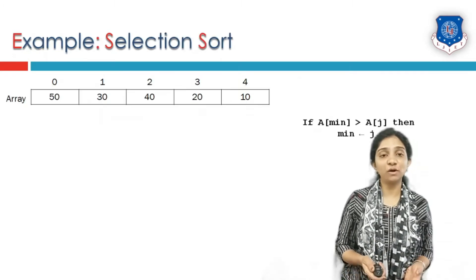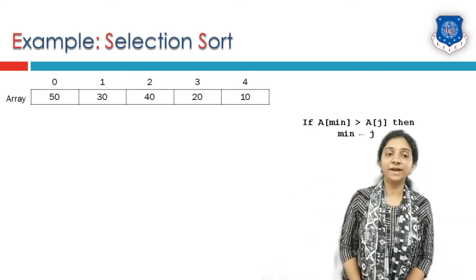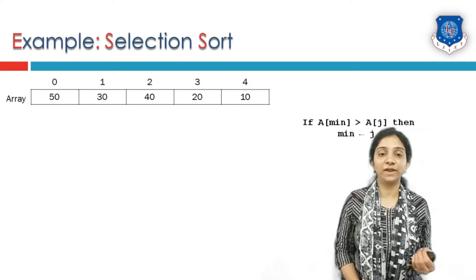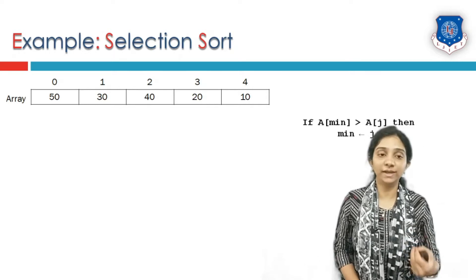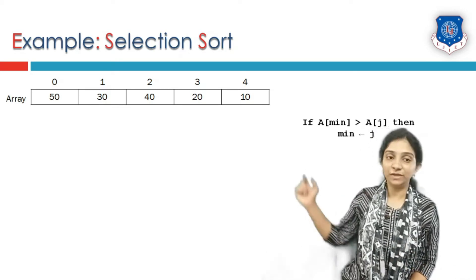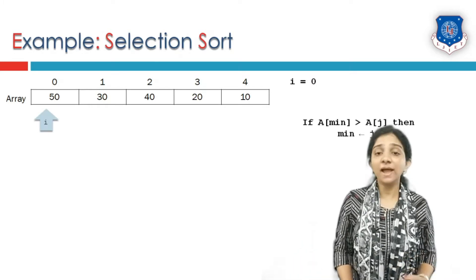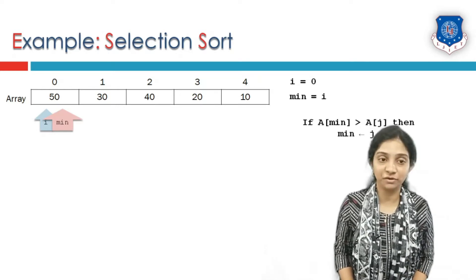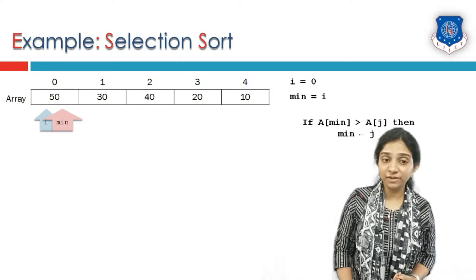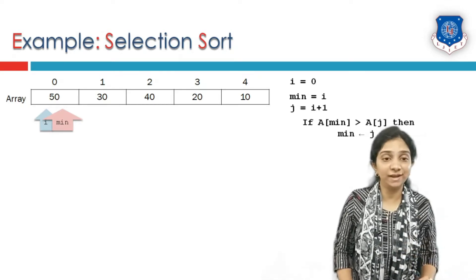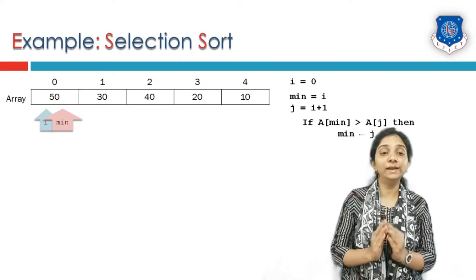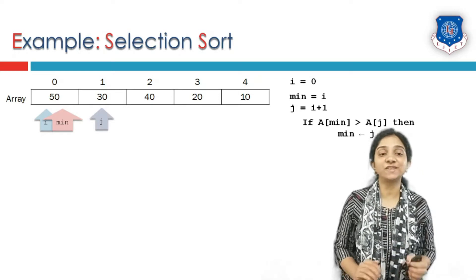Let us see the working of selection sort with the help of an example. We will consider an array of five elements whose indices are starting from 0 to 4. We have to find out the minimum element and swap it with the ith element. So the first minimum element must take the very first position, that is index 0. We initialize i at index 0 and we initialize min index also at the same location as i, so initially we are considering the ith element is the minimum element. Then we initialize another element, the jth element, which is the next adjacent element of i, so j is initialized as i plus 1.